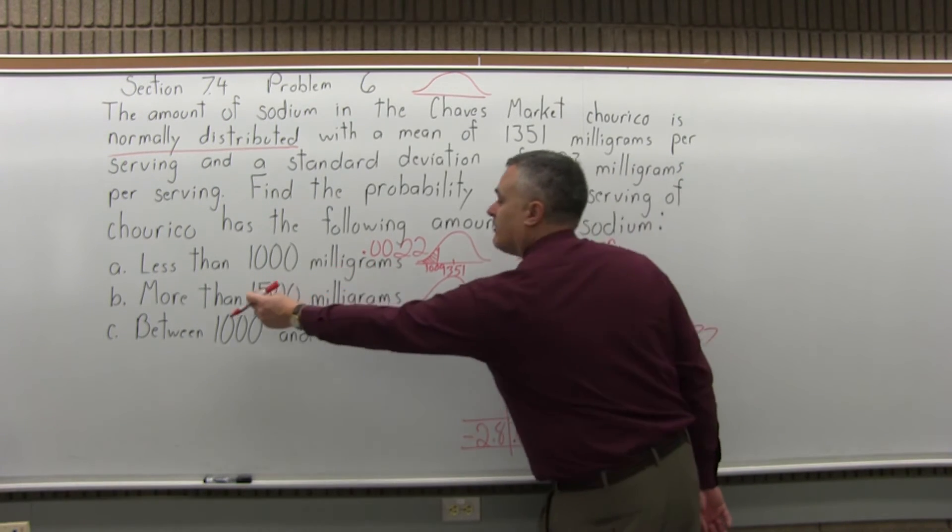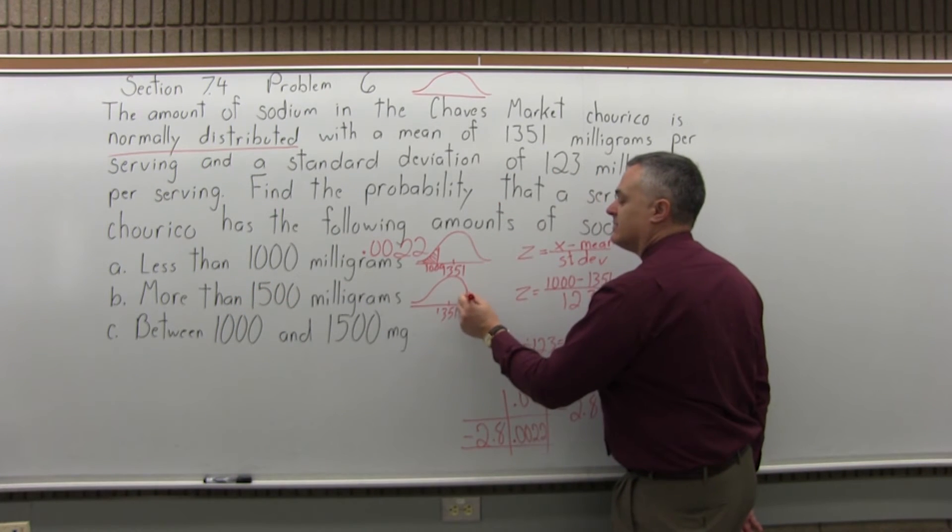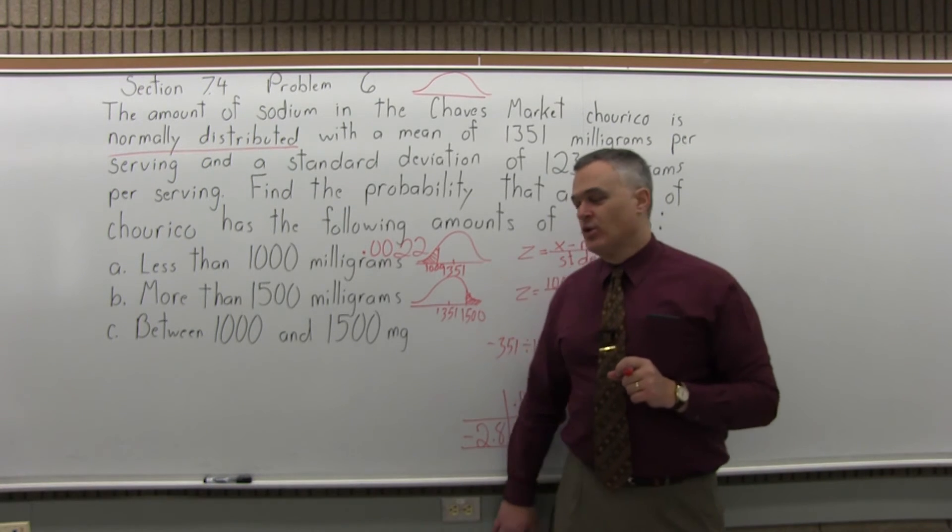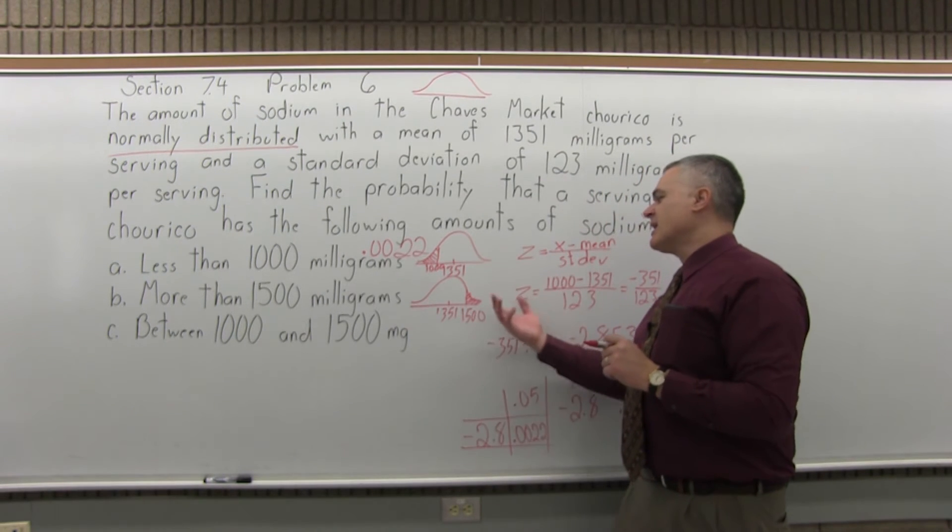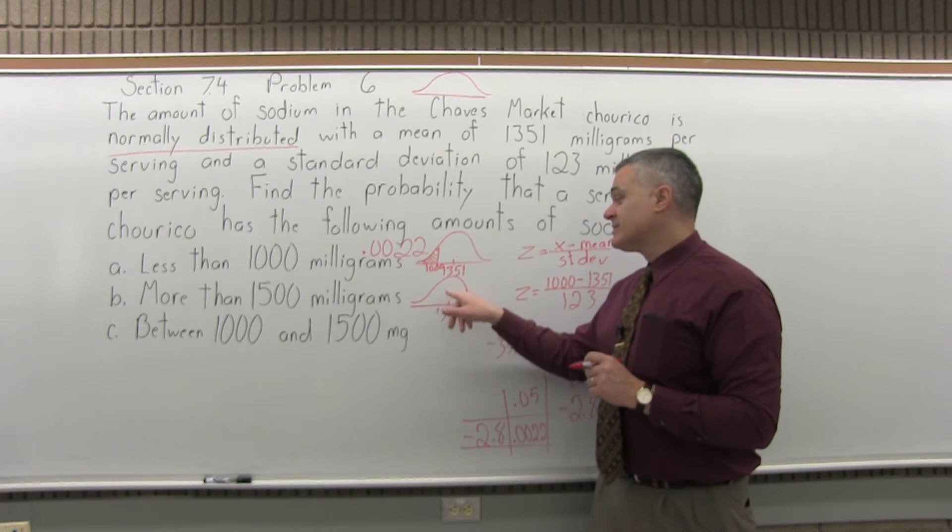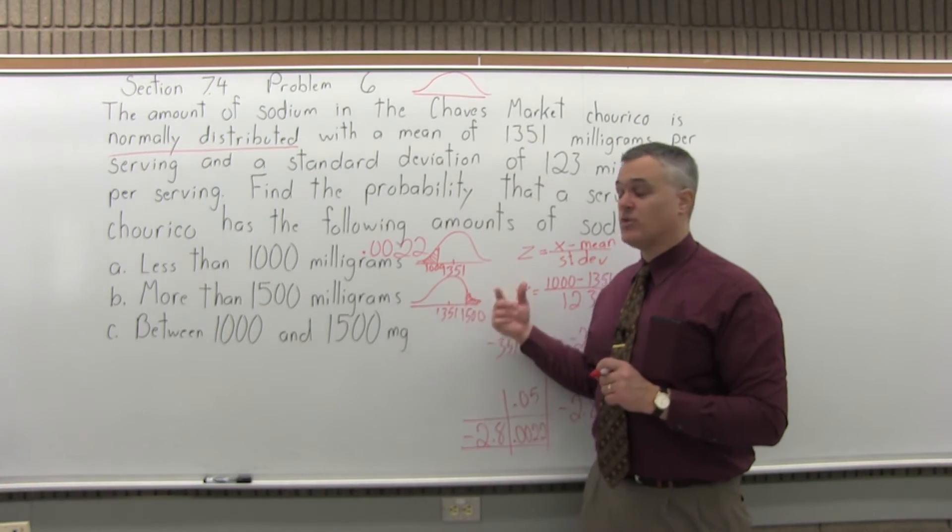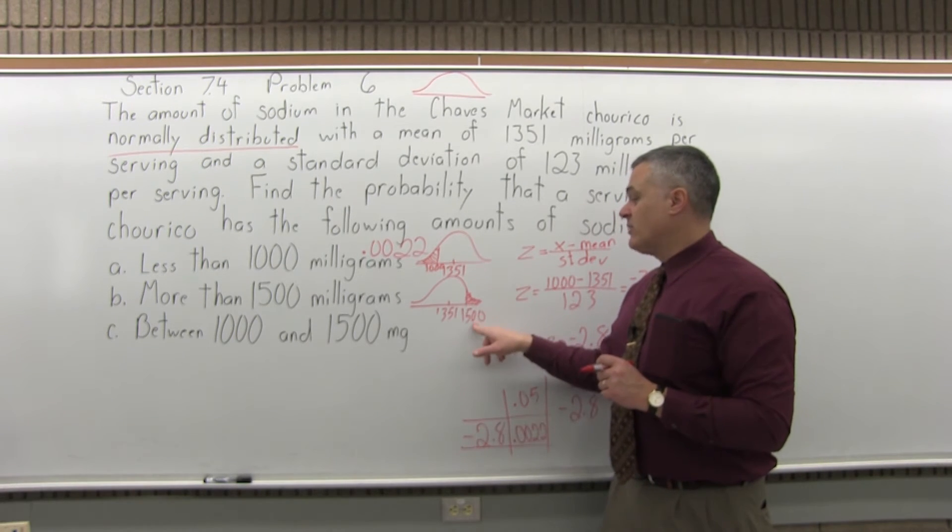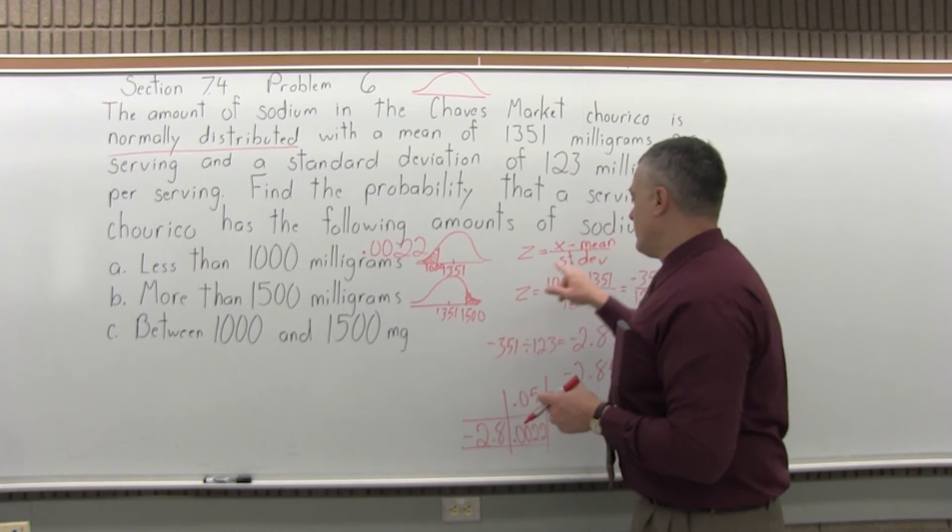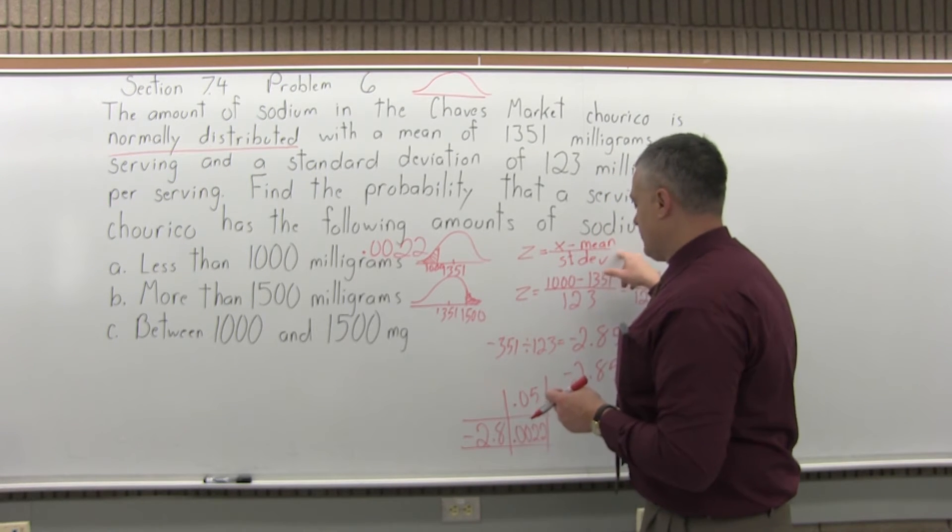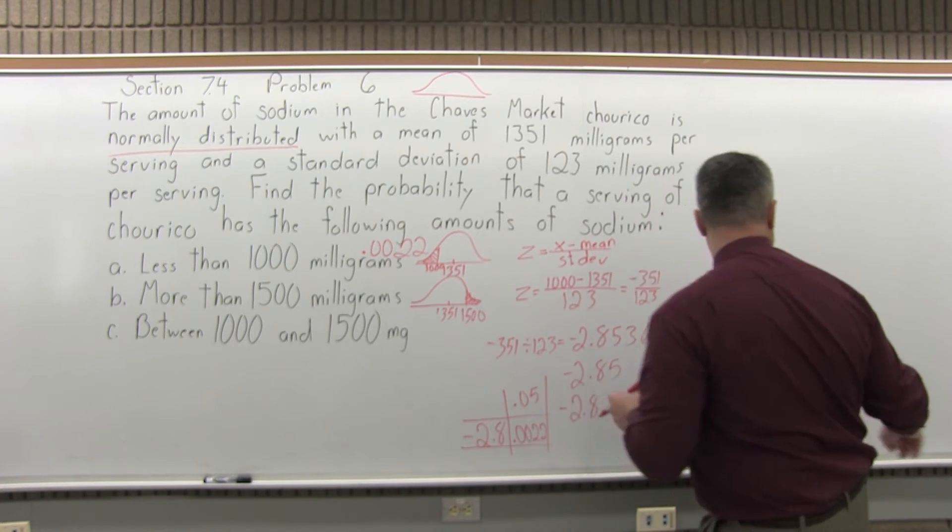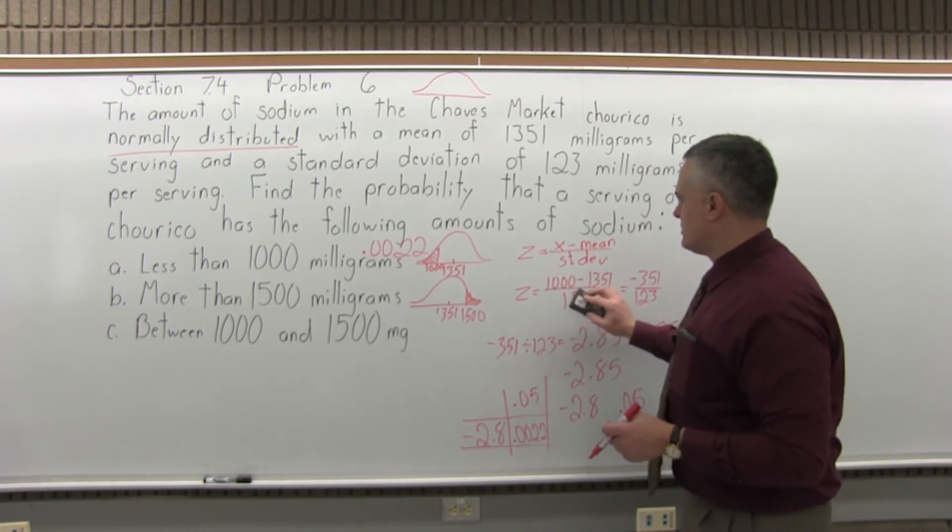And they want the probability of being more than, that's a greater than. So that's the area that we're looking for, that shaded area that comes after to the right of the 1,500. Now the chart's going to tell us the blank area, so we'll have to do 1 minus the chart value. So we have to convert the 1,500 into a Z-score and look it up.